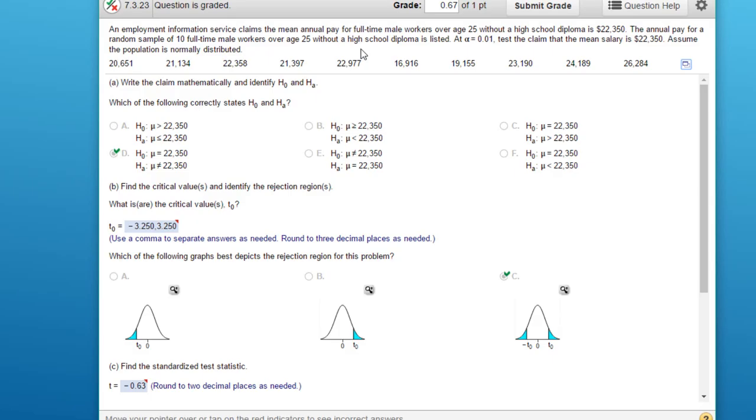The first thing I want to do is look at the first part of the question: what are the null and the alternative? Since the claim is that the mean is $22,000—in other words, the mean salary equals $22,350—that means it has to be the null. The null always has the equality. The alternative always has the inequality. So the null is mu equals $22,350. Now if we look down here and you pick the right one, mu equals $22,350 is the claim, and the alternative has to be the complement, which would be not equal to $22,350.